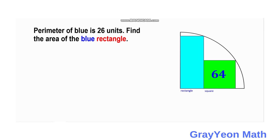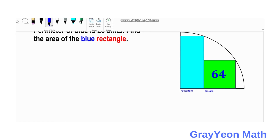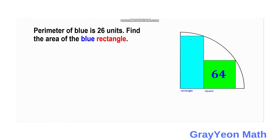The first thing we need to do is label this rectangle with its dimensions. We label this length as A and this as B. The 64 square unit square has a side of square root of 64, so this will be 8, 8, 8, and 8. So this distance will be B minus 8.